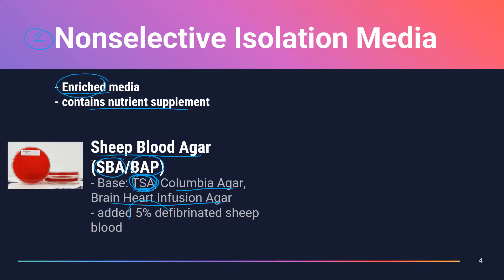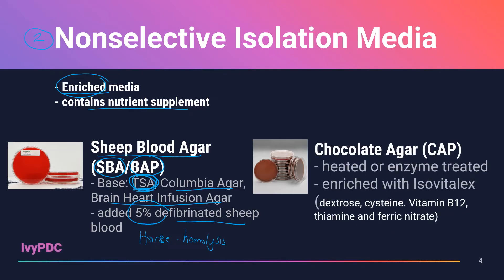Sheep blood agar is considered enriched because of the added 5% defibrinated sheep blood. Sheep blood is preferred because other sources like horse blood may give erratic reactions for hemolysis. The second enriched medium is chocolate agar plate (CAP), prepared similarly to BAP except the agar is heated or treated with enzyme to lyse the red blood cells, releasing NAD. Additional nutrients in CAP include isovitalex, which contains dextrose, cysteine, vitamin B12, thiamine, and ferric nitrate, supporting fastidious bacteria like Neisseria gonorrhoeae and Haemophilus influenzae.